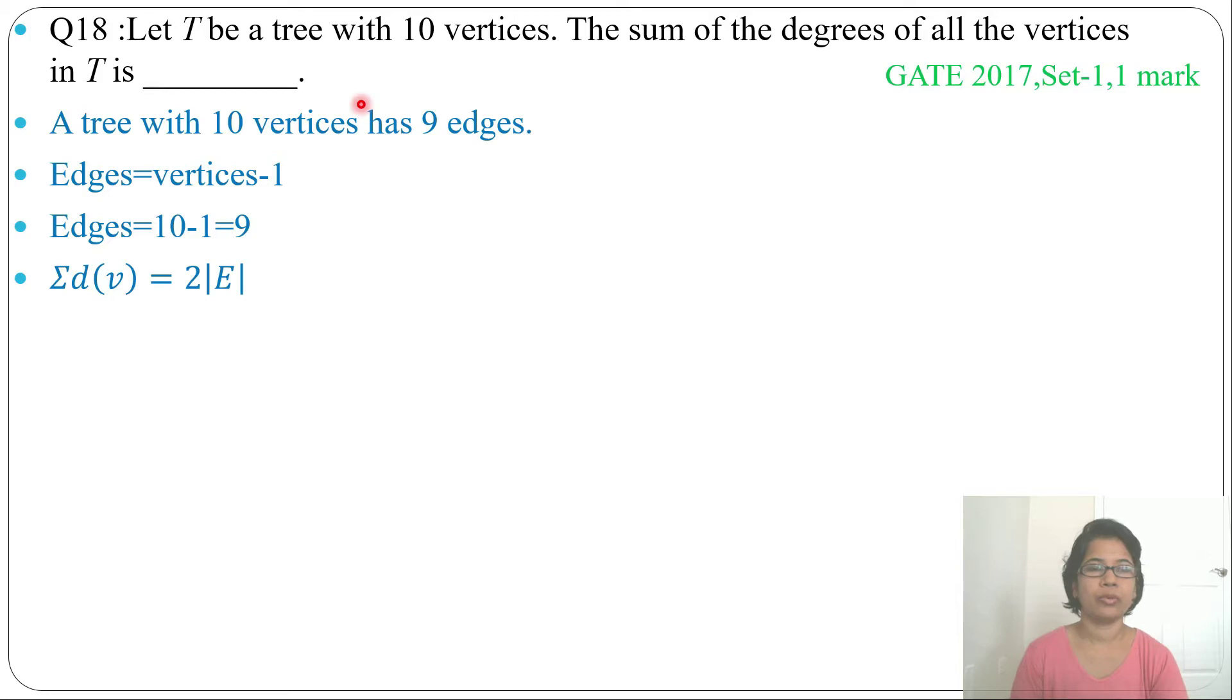And we know the sum formula that sum of all degree equal to 2 into edge. So this is from graph. Sum of all degree, so d of v is degree of v. Sum of all degree equal to 2 into E.